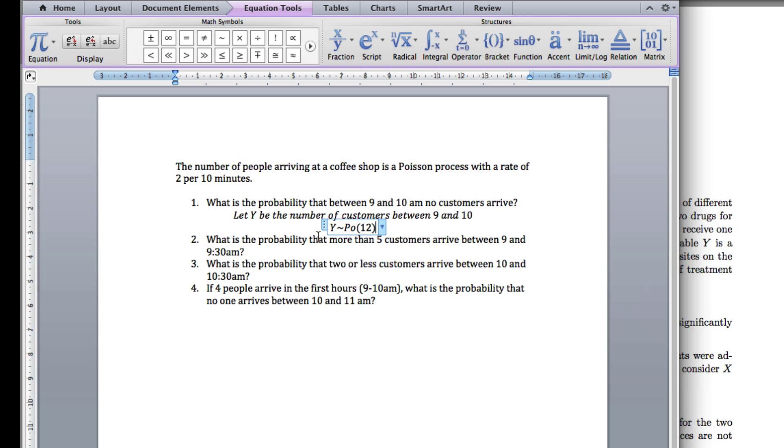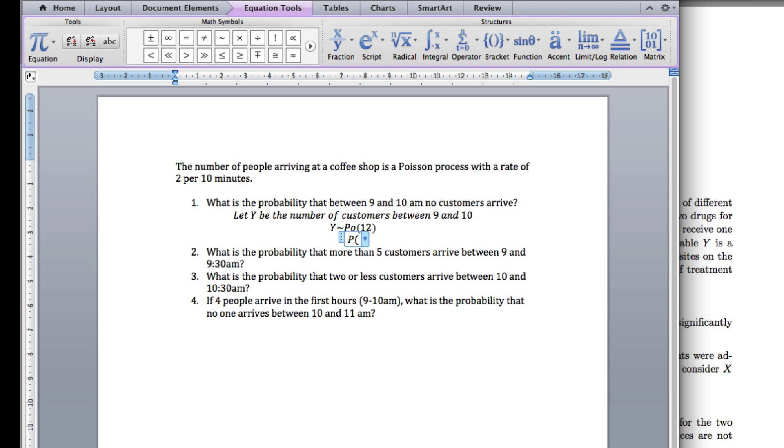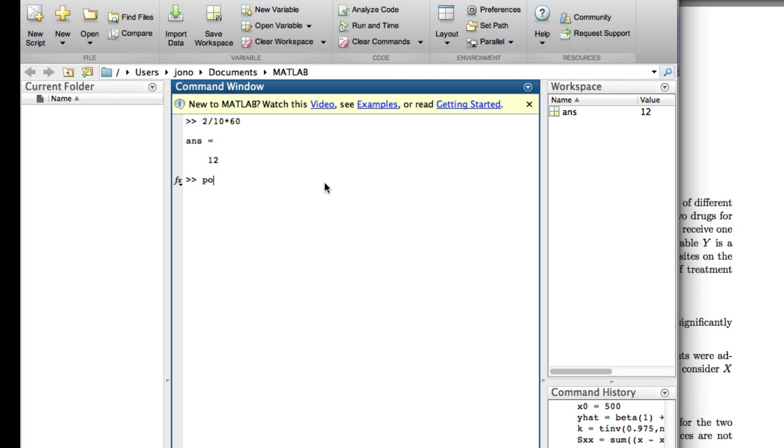Now the question asks for no customers, so we want the probability that Y equals 0. We've got 0 between that, so easy enough, we go to MATLAB. We've got a Poisson. We want the probability density function.